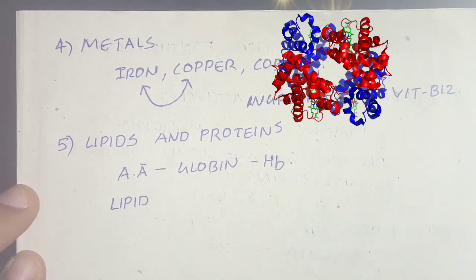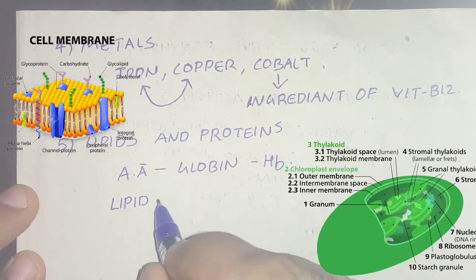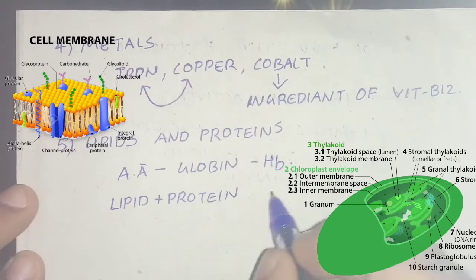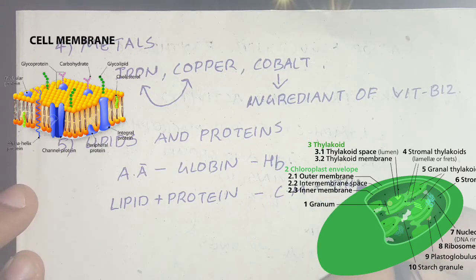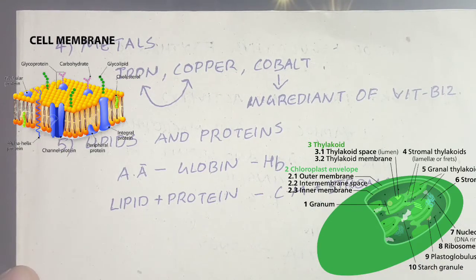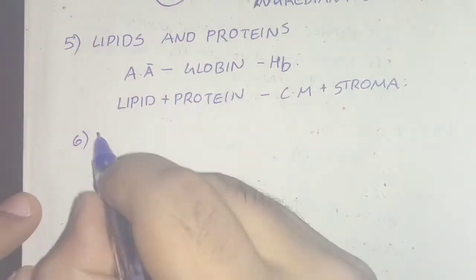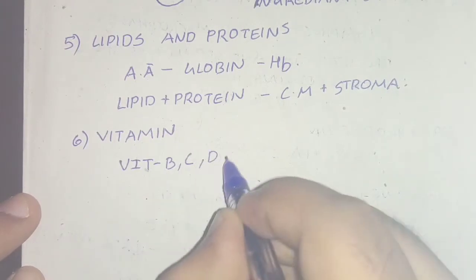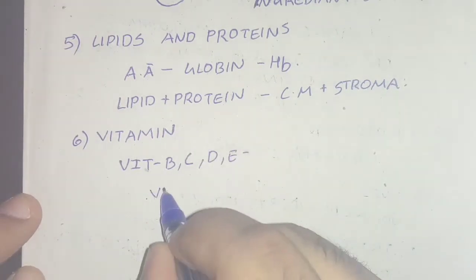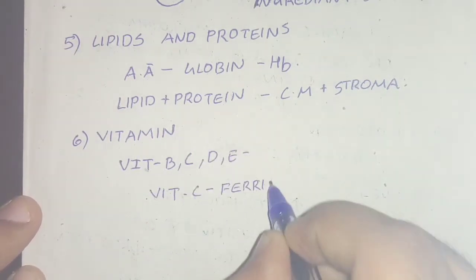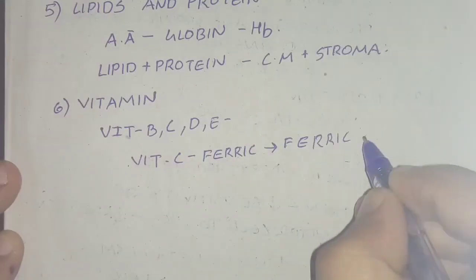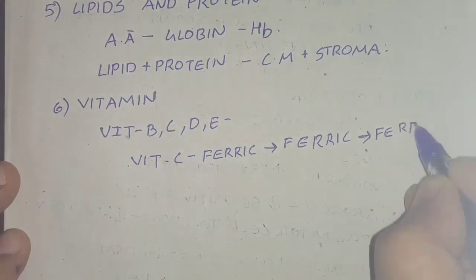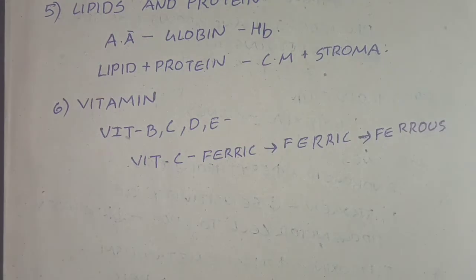Lipids and protein amino acids are necessary for the synthesis of the globin part of hemoglobin. Lipids and proteins are also necessary for the normal integrity of the cell membrane and stroma of the erythrocyte.